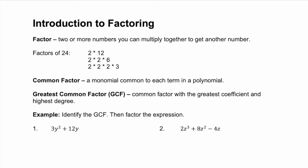If we look at the factors of 24, there are a few possibilities. We could do two factors: 2 and 12. Those multiply to 24.